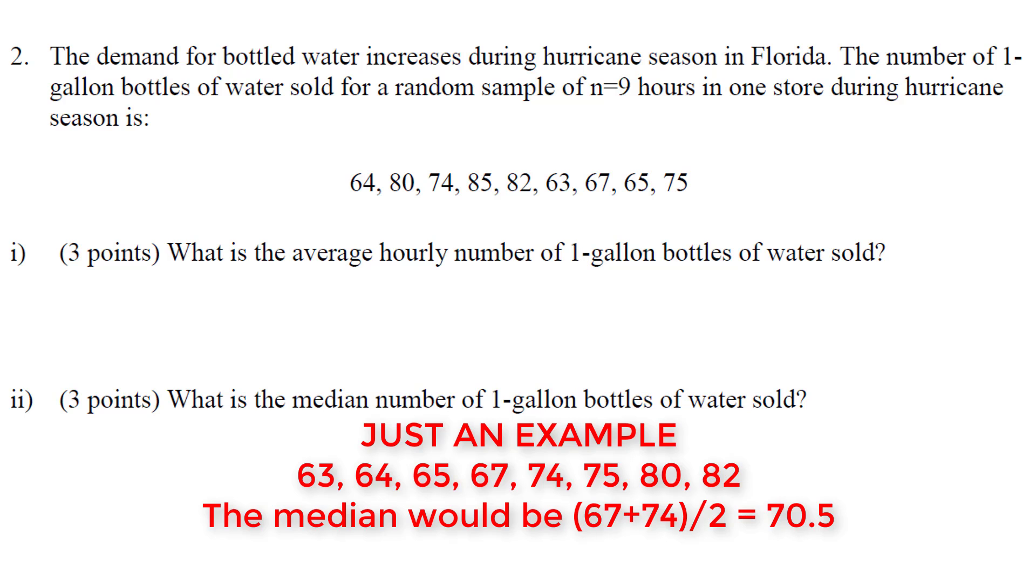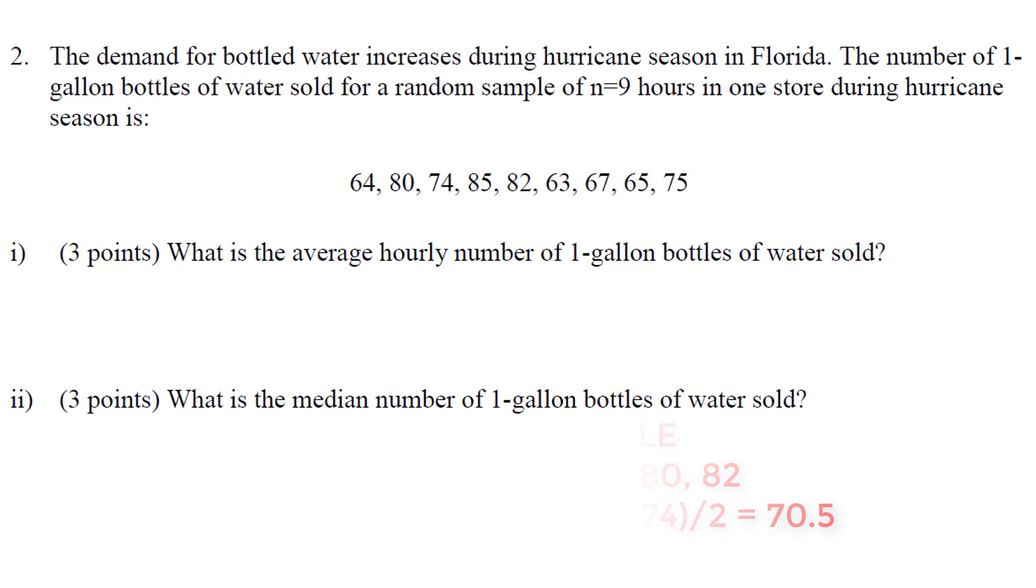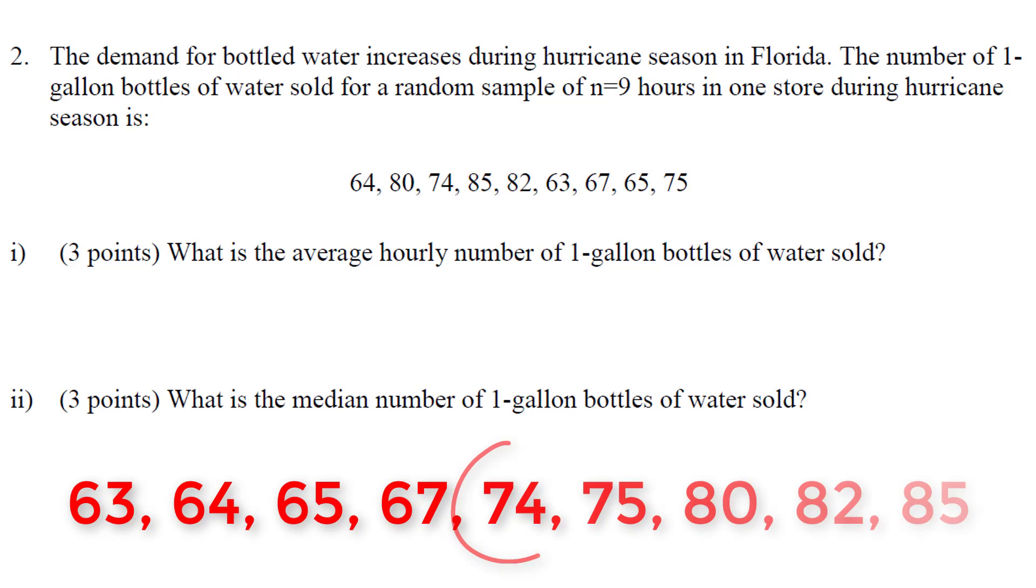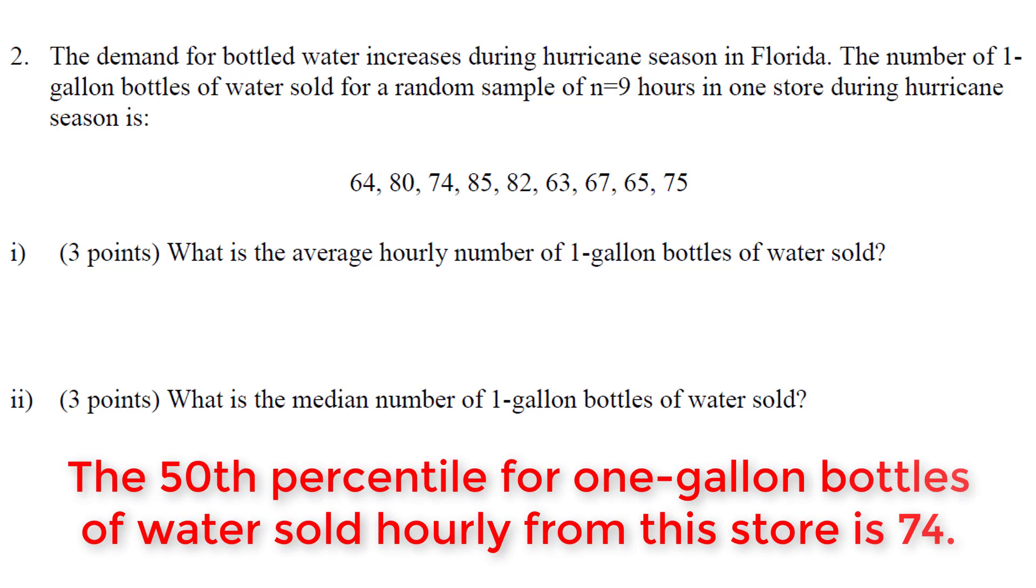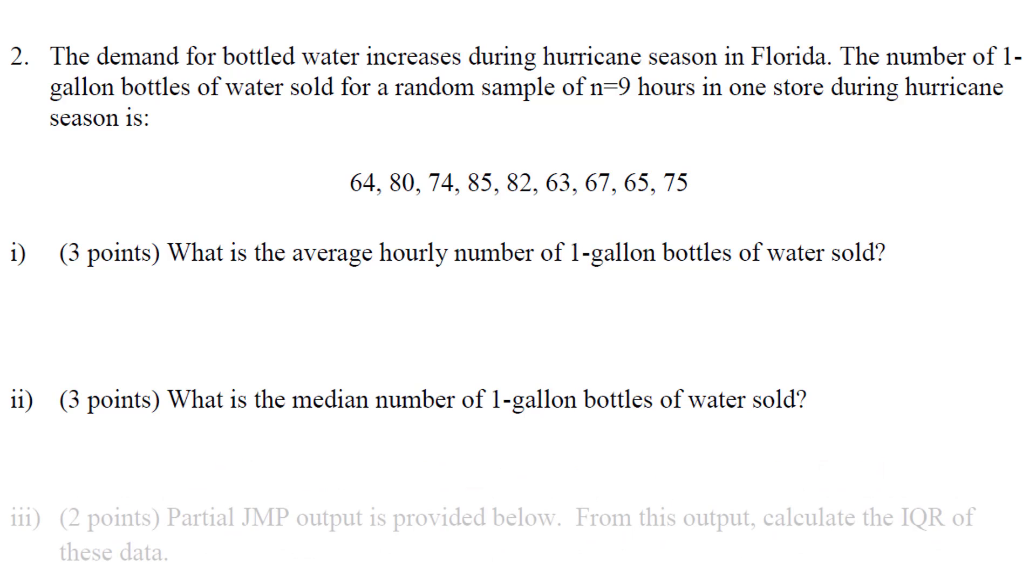You can find this once again by putting them in order, and then noticing that there is no middle number. In our problem the middle number is 74. To interpret this value, which goes above and beyond for this problem, would be that the 50th percentile for hourly one gallon bottles of water sold from this store is 74. The median is the 50th percentile.